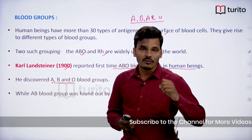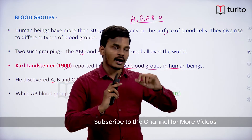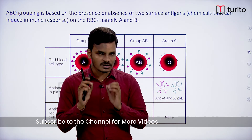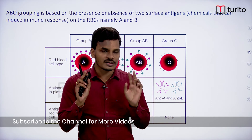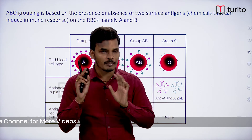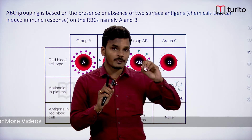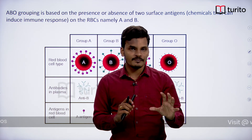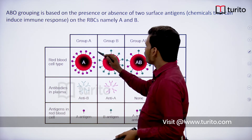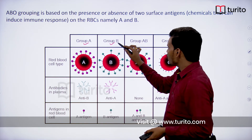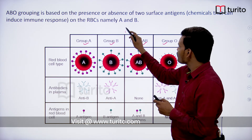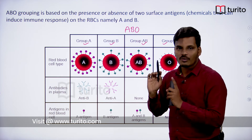Now we will see what factor actually determines and differentiates these blood groups. In the ABO blood group system, there are two antigens present: antigen A and antigen B. Based on which type of antigen is present on the RBC, that blood group name is identified. The four different blood groups under the ABO system are A, B, AB, and O.